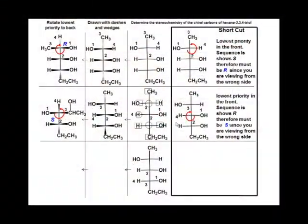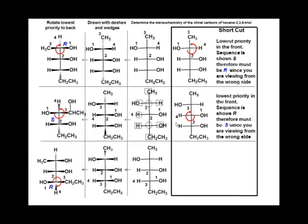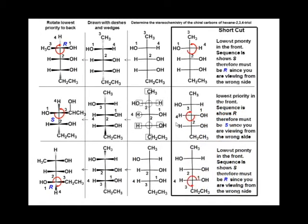Last chiral carbon — do the same. Prioritize, rotate the hydrogen to the back, and we see we have an R configuration. If we just looked at the Fisher projection, the sequence is going anti-clockwise. If we were looking at the molecule from the other side, the sequence would be clockwise, and thus the chiral carbon has an R configuration.